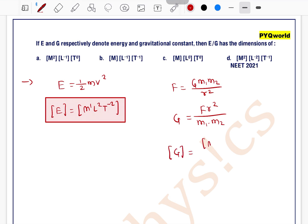The dimension of G equals the dimension of F which is m¹l¹t⁻², and r² is l², divided by dimension of m₁m₂ which is m². This can be written as m⁻¹l³t⁻². This is the dimension of G.